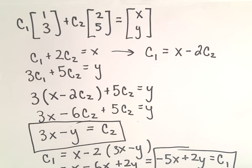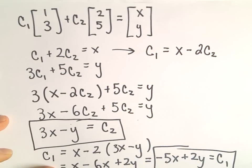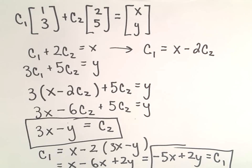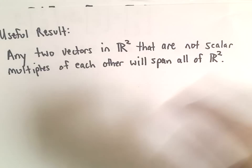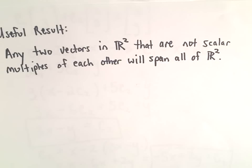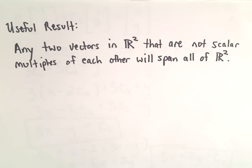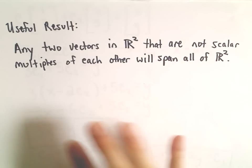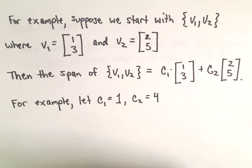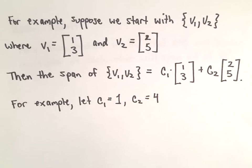This is the basic idea of the span of vectors. I used vectors in R2 to keep the arithmetic manageable, but you can extend this to any vector space R sub n and go through the same argument, albeit more tedious. Any two vectors in R2 that are not scalar multiples of each other will span all of R2, though we have to be more careful in higher dimensions. The idea of span is: starting with a certain number of vectors, what new vectors can you produce through linear combinations? That's the basic idea.